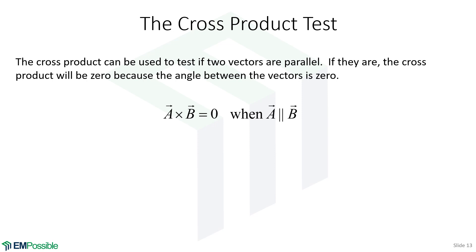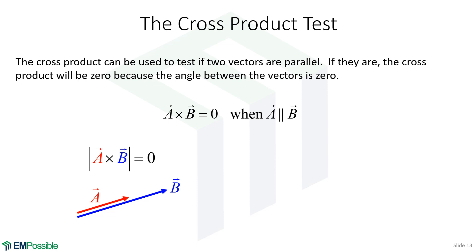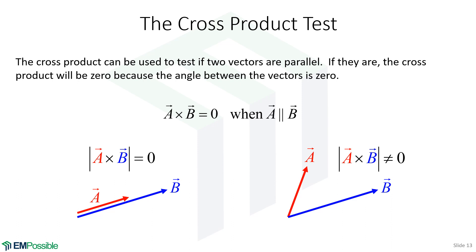Like the dot product, the cross product can be used as a test — this time to see if two vectors are parallel. If A and B are parallel, the parallelogram they define has zero area, so the cross product is zero. When they're not parallel, the cross product is not zero. In fact, when A and B are perpendicular, the cross product has its maximum magnitude, since that's when the parallelogram area is greatest.